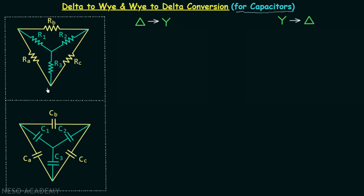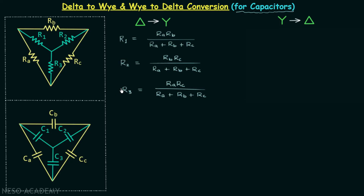Whenever we have the delta network of resistors and for the simplicity of the network we want to replace this delta network by the Y network, we use this set of formulas to calculate the unknown resistances of the Y network, which are R1, R2, and R3.